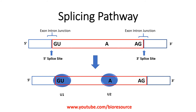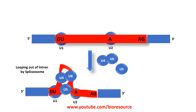The splicing pathway involves the binding of U1 and U2 to the 5-prime splice site and the branch point respectively, so these two come and bind to their respective sites. The next step is the binding of U4, U6, and U5. This binding creates a looping out of the intron — the spliceosome creates a loop structure, so the intron becomes a loop-like structure due to the spliceosome binding.